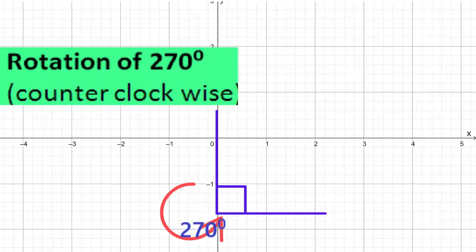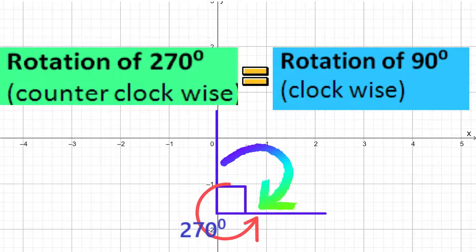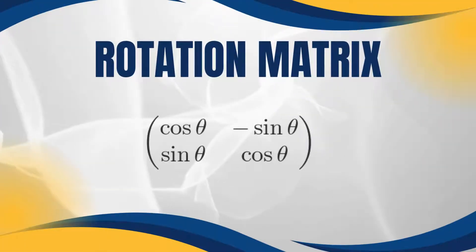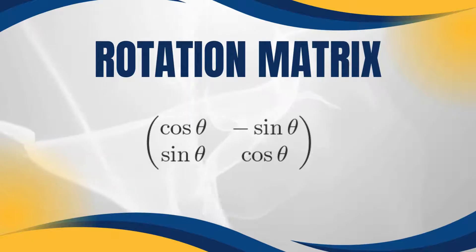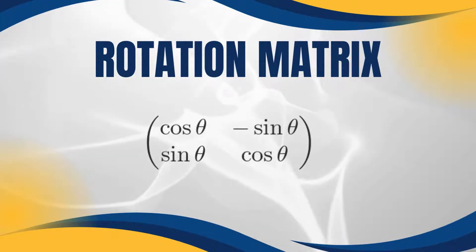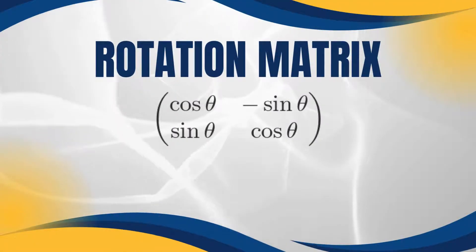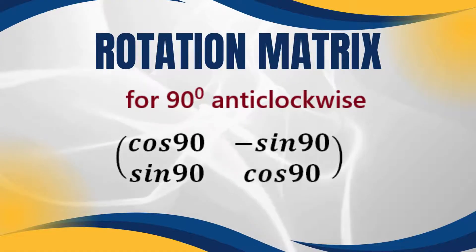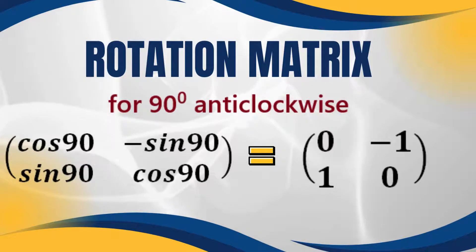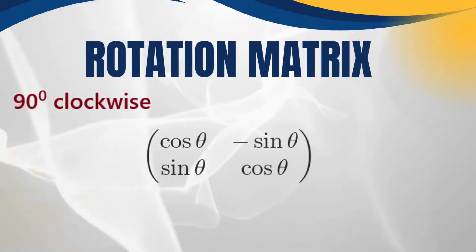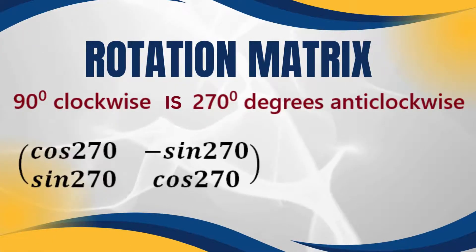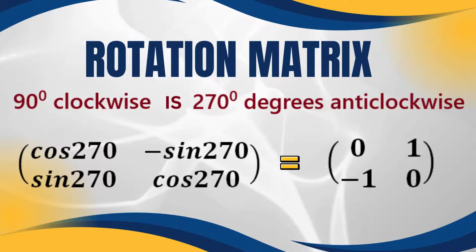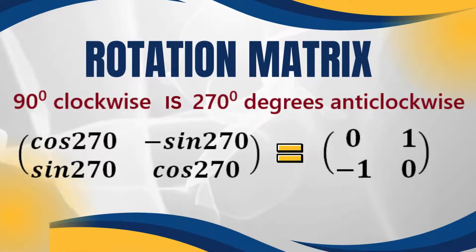Note that a 270 degrees clockwise rotation is the same as a 90 degrees anticlockwise rotation, while a 270 degrees anticlockwise rotation is the same as a 90 degrees clockwise rotation. The transformation matrix seen here can be used to summarize rotations through an angle theta with center at the origin. Note that the rotation angle theta represents the angle of rotation in the anticlockwise direction. So to get the matrix transformation for a 90 degrees clockwise rotation, we substitute 270 for theta, since the 90 degree clockwise rotation means the anticlockwise angle of rotation is 270 degrees.